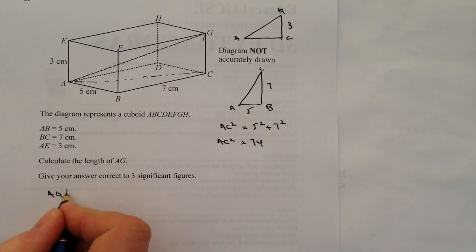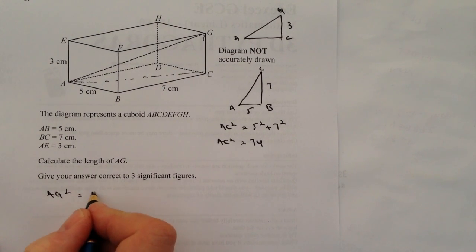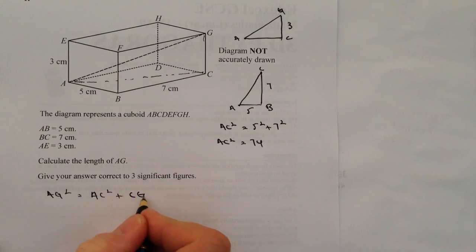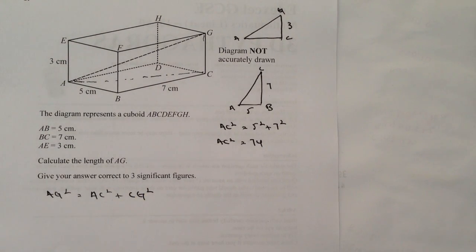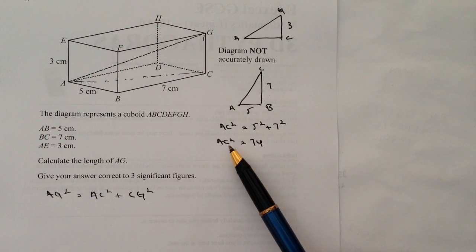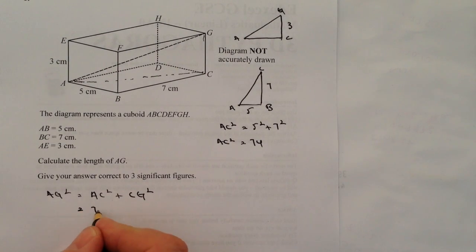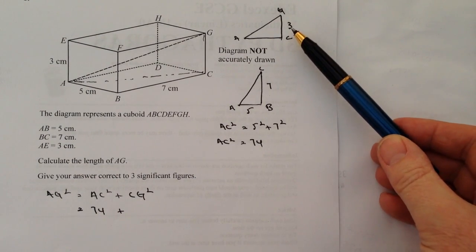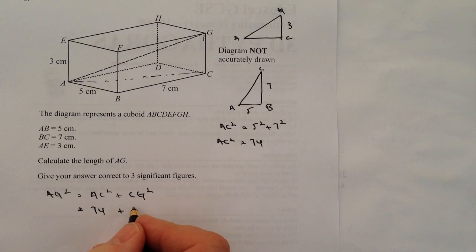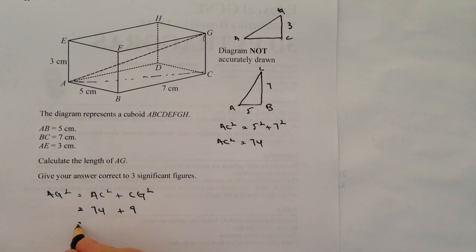Okay, so we've already got AC squared which we've worked out as 74, so I can plug that straight in. And then I've got CG squared. Well, CG 3 squared is 9. So in other words, AG squared which is what they're asking us to calculate is going to be 74 plus 9 which is 83.